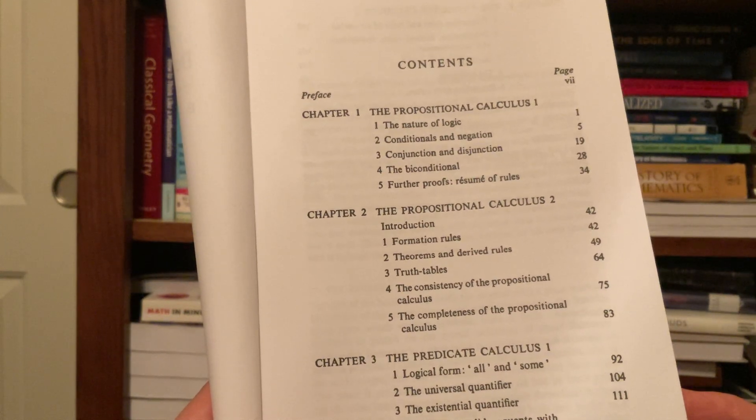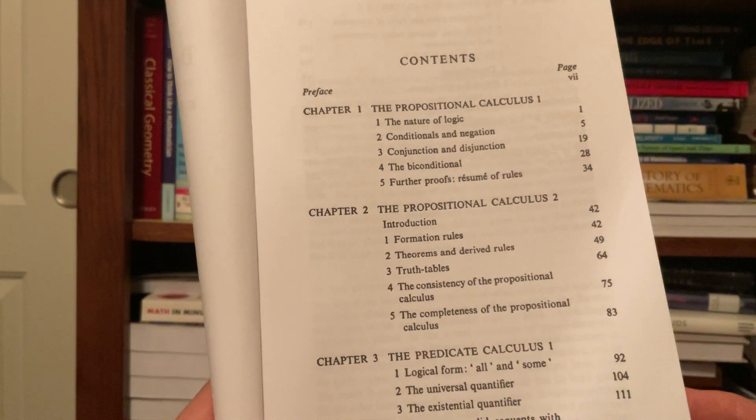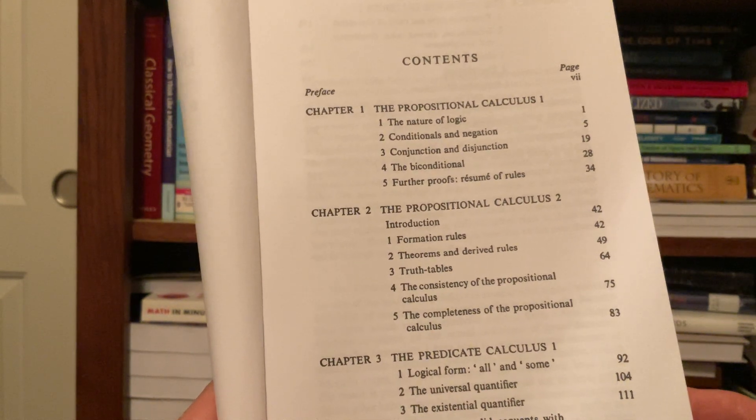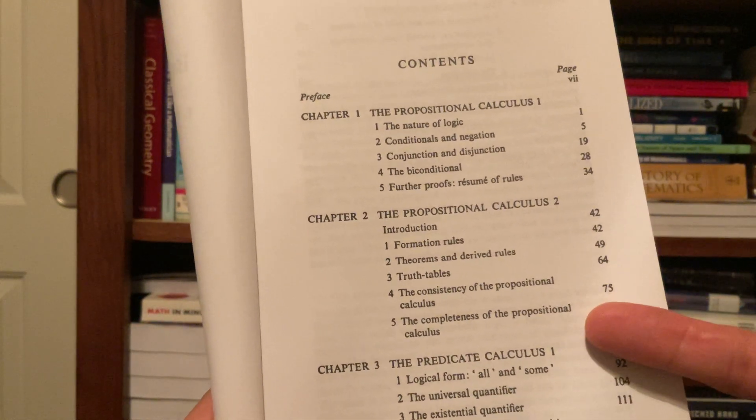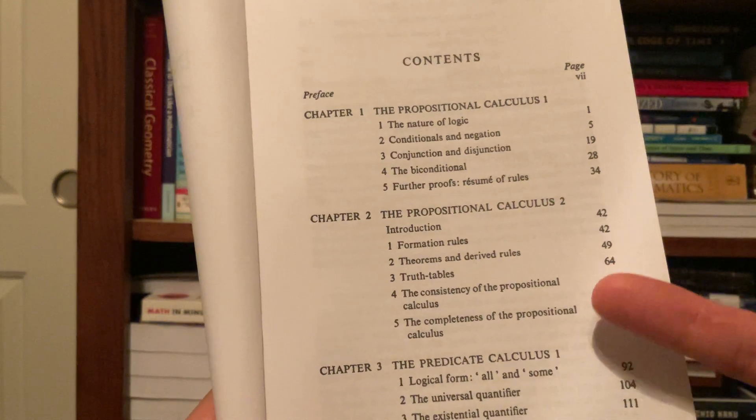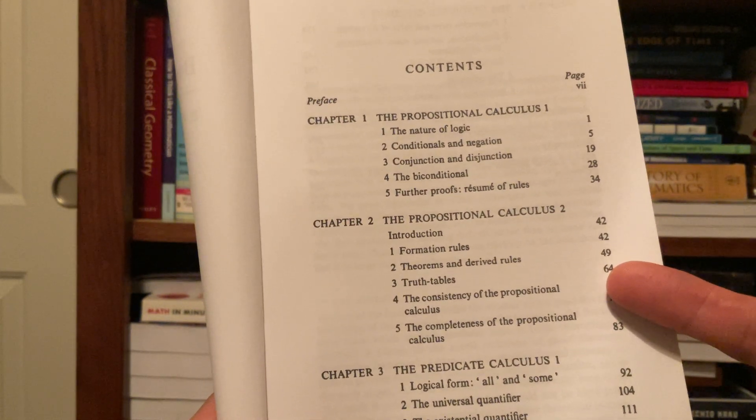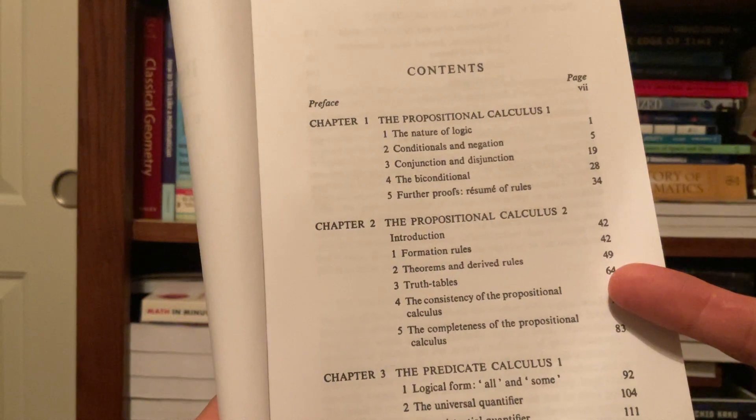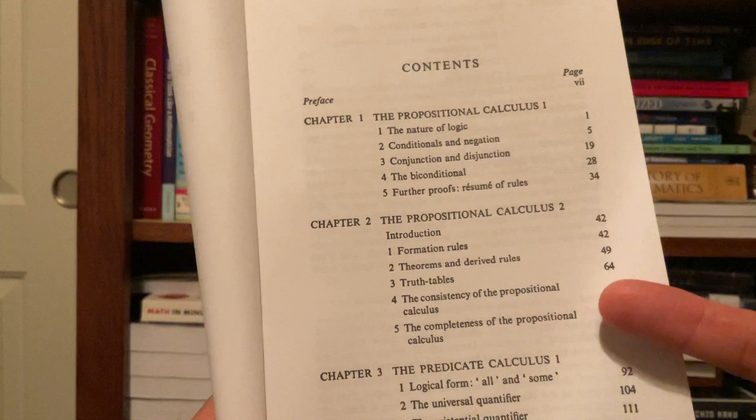Chapter 2 continues propositional calculus, or propositional logic: formation rules, theorems and derived rules, truth tables, but also the consistency of propositional calculus and the completeness of propositional calculus. So these are not topics you will typically cover in an introductory logic book designed for, say, a philosophy course. And even if you're a math major, you may not even encounter these topics.